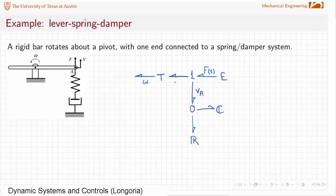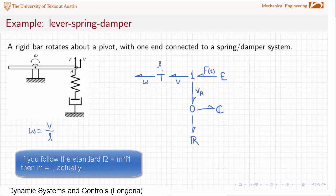And whatever that length is, that's going to be what my modulus is. Let's just use a length L here. I know that omega and velocity V here are related. We know that omega is basically V over L.